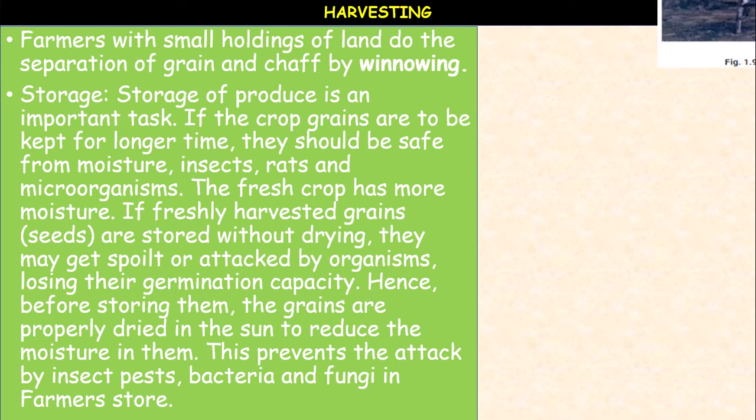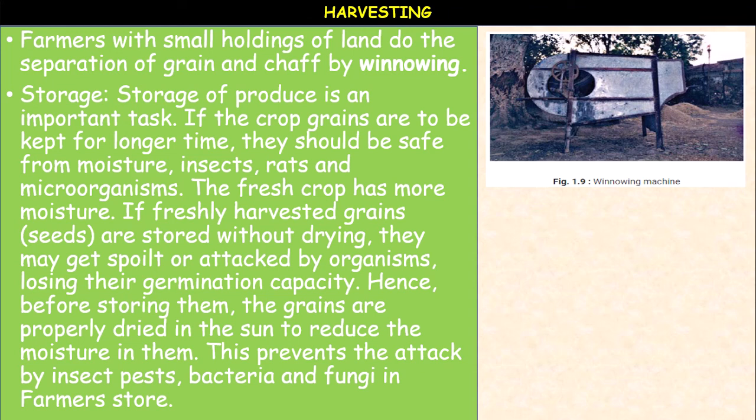Storage of produce is an important task. If the crop grains are to be kept for a long time, they should be safe from moisture, insects, rats, and microorganisms. The fresh crop has more moisture. If the freshly harvested grains or seeds are stored without drying, they may get spoiled or attacked by organisms like bacteria and fungi, and they lose their germination capacity. Hence, before storing them, the grains are properly dried in the sun to reduce the moisture in them. This prevents the attack of insect pests, bacteria, and fungi in the farmer's storehouse.